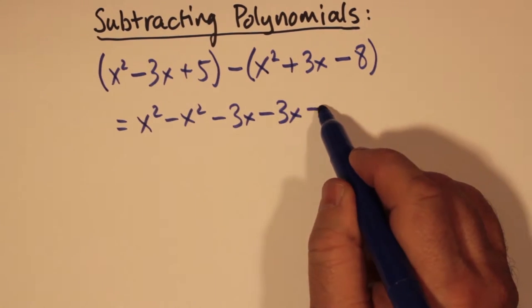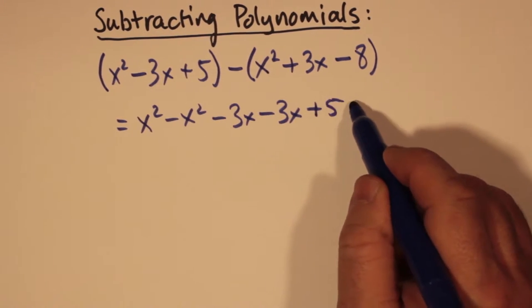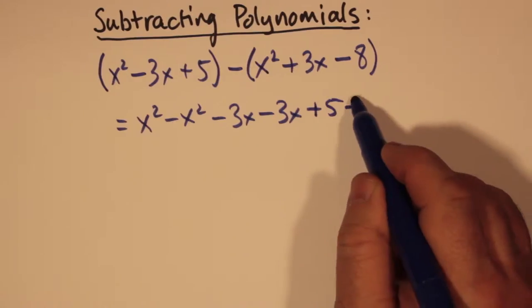And the negative 8, the minus 8, the last term in the second polynomial, the negative 8 gets switched to a positive 8. That's the effect of the minus sign outside the bracket.